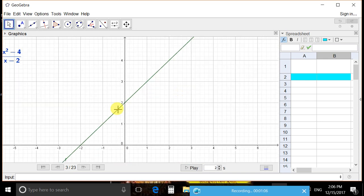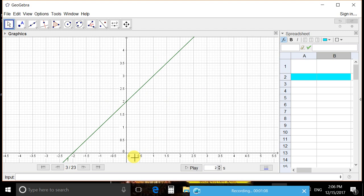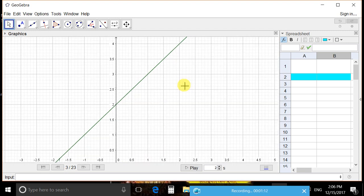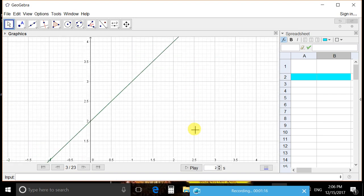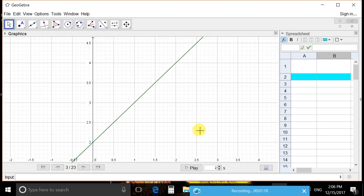When you enlarge this graph, suppose x is approaching 2, the value of y is approaching 4. You can see here, when x is approaching 2, y is approaching 4.